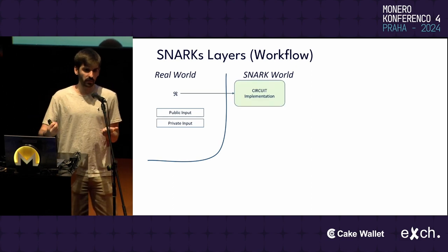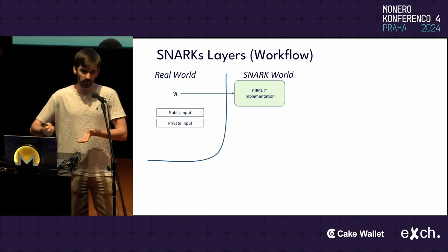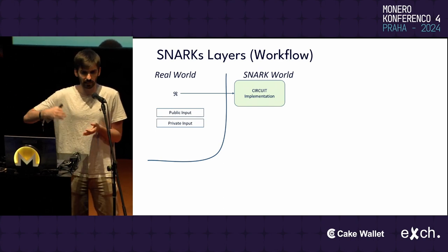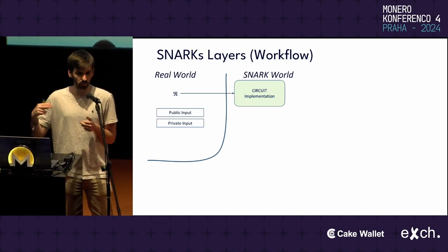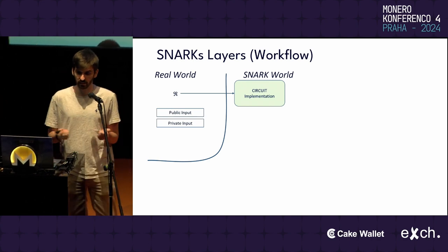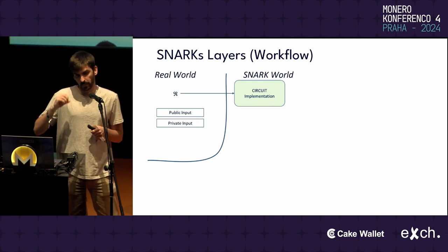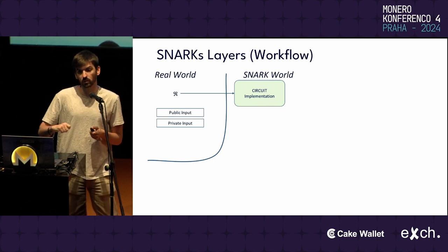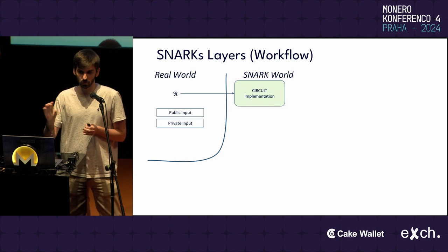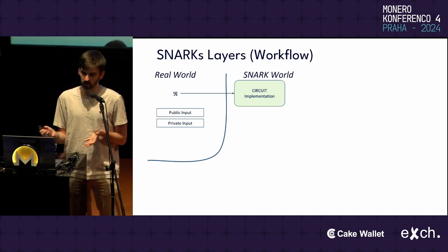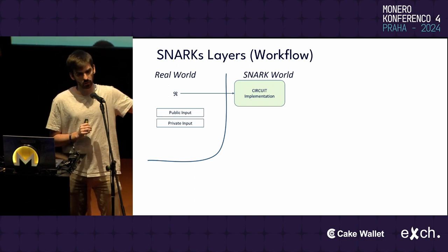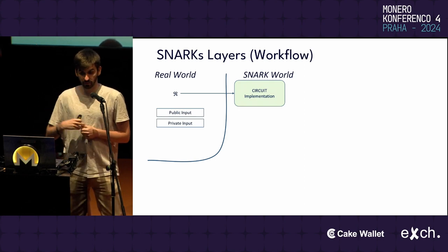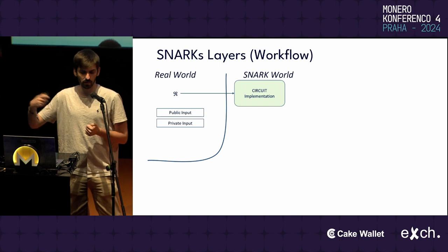We need to manually translate that program and write a circuit. Typically we write circuits in domain-specific languages for SNARKs — some examples are Halo2, Circom, Noir, and many more. In those circuits, we have to both define how to compute some values from inputs, but also constrain those computations to only accept the correct computation — you can imagine that as putting assert statements in your code. The computation part is performed by the prover, and the assertions are evaluated by a verifier.